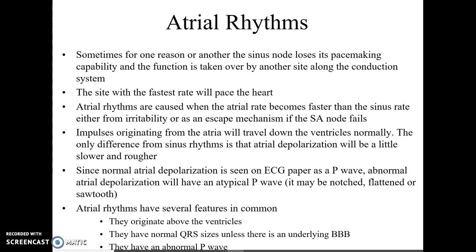Sometimes for one reason or another, the sinus node loses its pacemaking capability and the function is taken over by another site of the conduction system. We have to remember that whatever has the fastest rate is what's going to pace the heart. Normally that should be the SA node at a rate of 60 to 100, but if there's anything that's irritated in the atria, it can take over. Atrial rhythms are caused by the atrial rate becoming faster than the sinus rate — it can be from irritability or an escape mechanism, but 99% of the time when we're looking at atrial rhythms, it's usually an irritability issue.